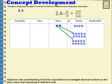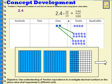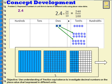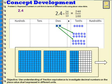Another way I can prove this is by using an area model. Here I have an area model that represents two wholes and four tenths. I can separate those two wholes into hundredths as well. Now you can see that I have one hundred, two hundred, forty hundredths — two hundred forty hundredths.